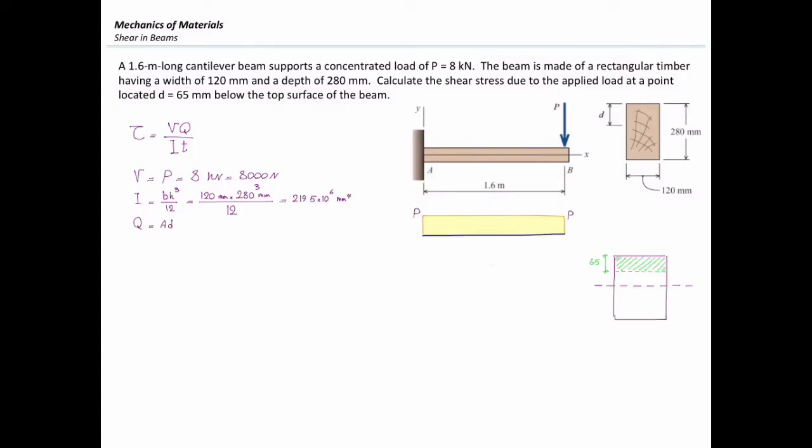What I need to determine here is simply the area of this hatched region and distance of its centroid to the centroid of the entire section. Area is simply 65 times 120. The distance of centroid of this subsection to the centroid of the entire section can be calculated in this way. This is the centroid of this section and it is at the middle of that subsection.